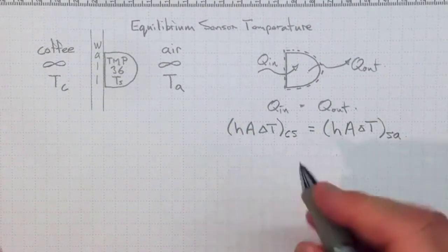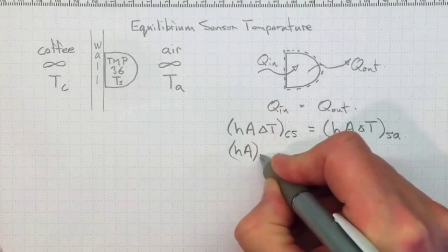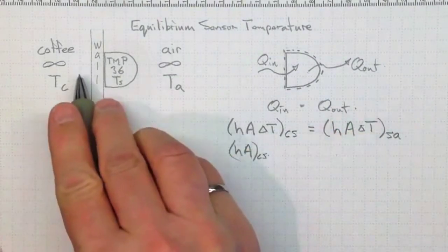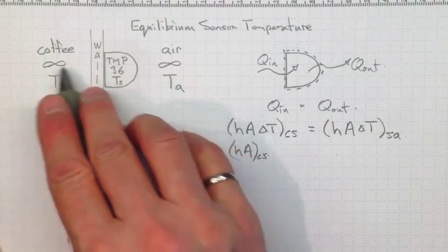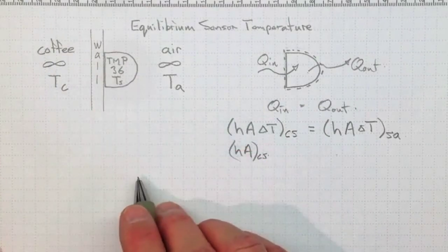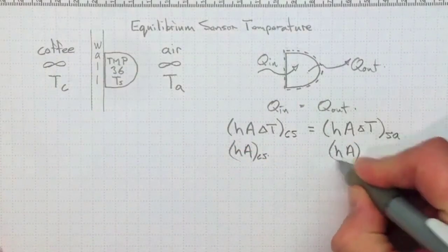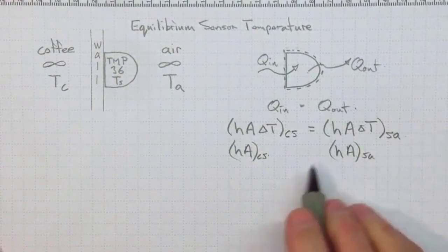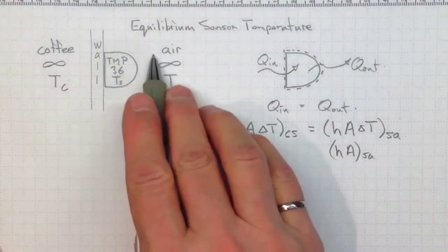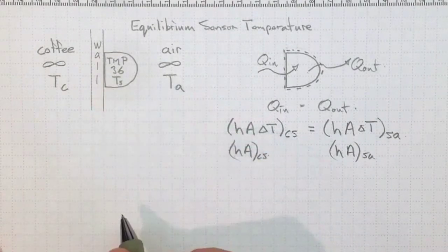So if we pull that out, hA_CS, that's all about how good this interface is at transferring energy from the coffee to the sensor. And hA_SA, that's all about how good the interface here is at transferring energy from the sensor to the ambient environment.